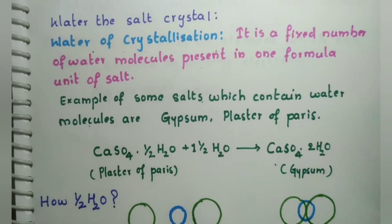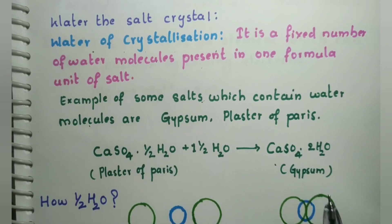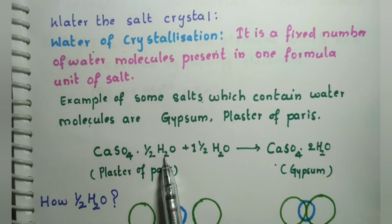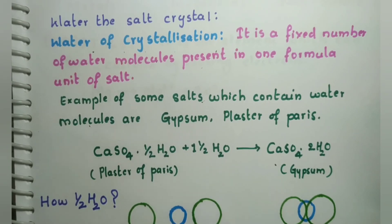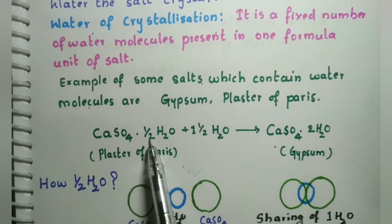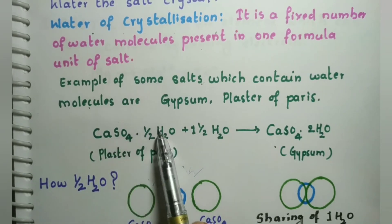Let us look at plaster of Paris. Plaster of Paris has the formula CaSO4·½H2O. Gypsum is CaSO4·2H2O, formed by adding one and a half molecules of water to plaster of Paris. The half water molecule is written because two molecules of calcium sulfate share only one water molecule — so each has half a molecule of water. That is why we write CaSO4·½H2O.